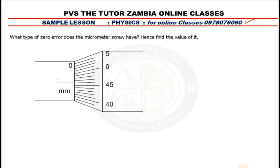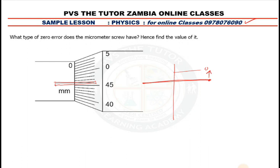Have you seen the way this line coming from the sleeve is in the same line as that line? So if zero is above that line — let's say zero is above the line joining the other line — if zero is above there, this is a negative zero error.